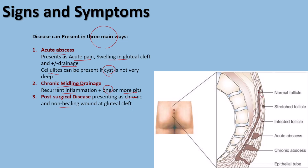As illustrated, a normal follicle can become infected, leading to an acute abscess. The abscess can then progress to the chronic phase, with creation of sinuses in this group of patients.